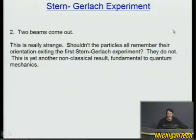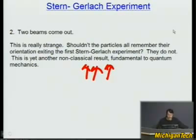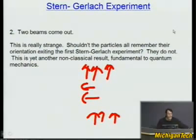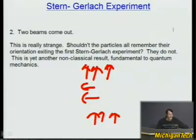That's really strange. You took particles that came out of the first Stern-Gerlach experiment as all spin up, threw away the rest. Then you made them all spin sideways, took only those, and then went to see if they're still spin up. But they're not. Half of them are spin up and half are spin down.